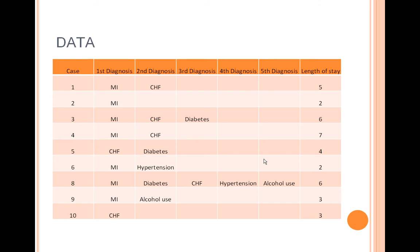Length of stay is reported for each case. Take for example case 3. Patient 3 was noted for having a first diagnosis of MI, a second diagnosis of CHF, and a third diagnosis of diabetes. This patient had a length of stay of 6 days.